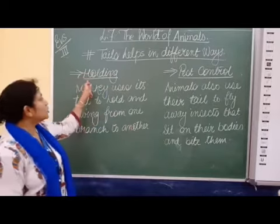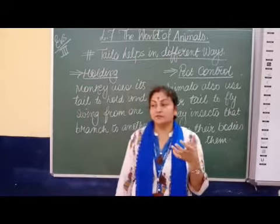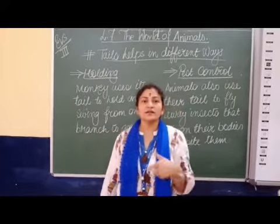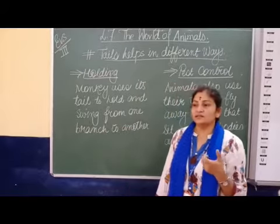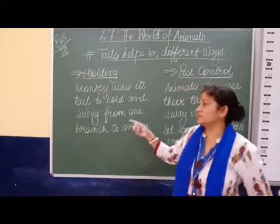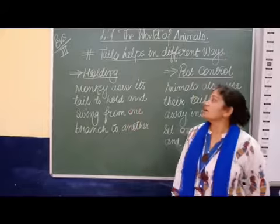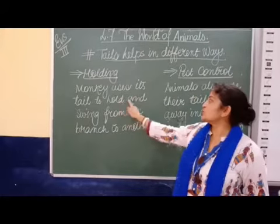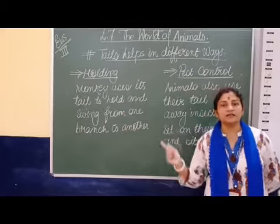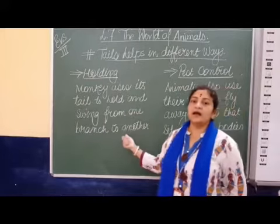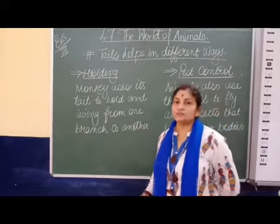Now when we are talking about holding — animals use the tail for holding onto branches to swing here and there. We see this mostly with monkeys. A monkey uses its tail to hold and swing from one branch to another. You must have seen monkeys swinging around. With the help of their tail they can swing from one branch to another.